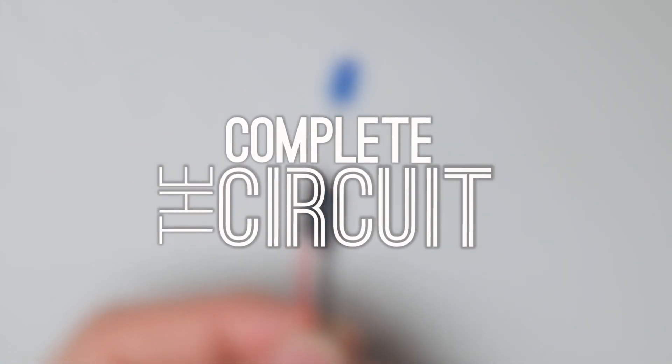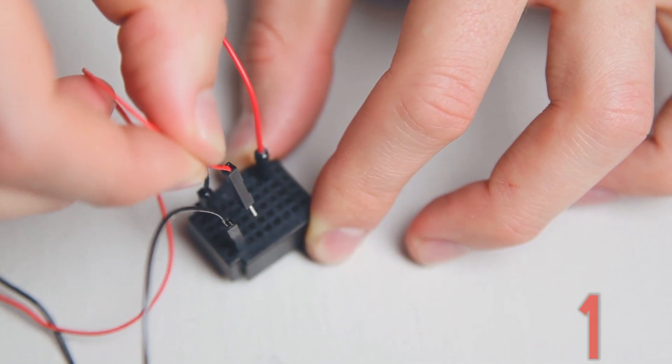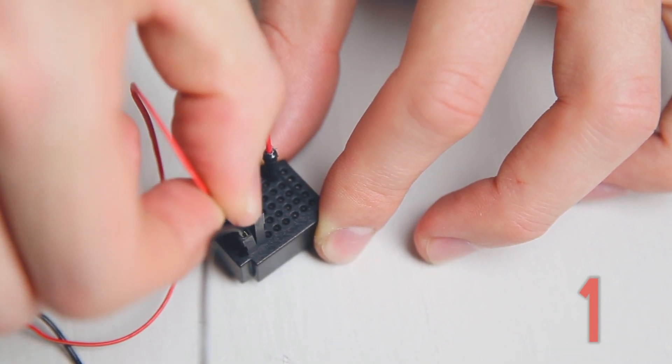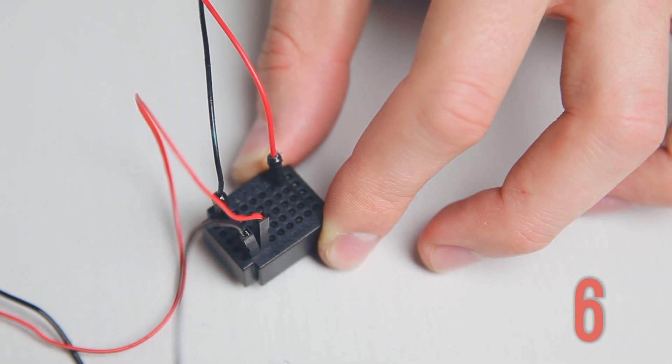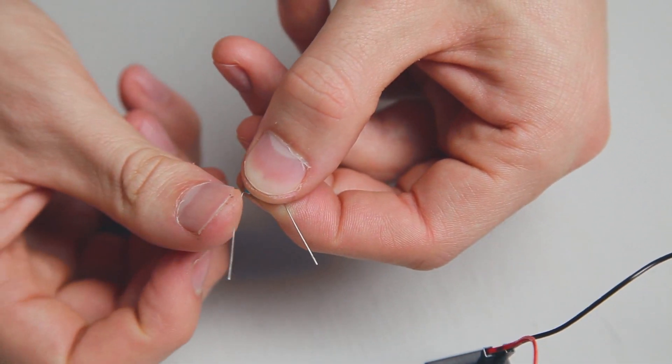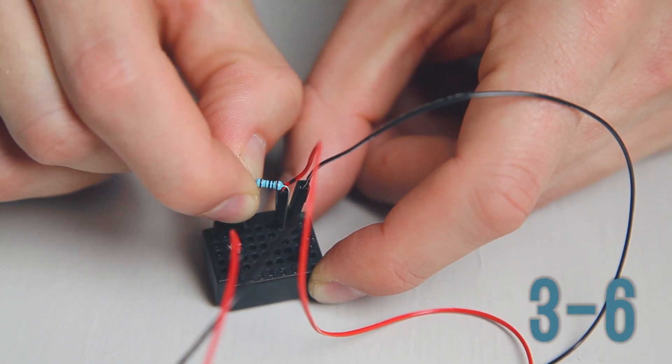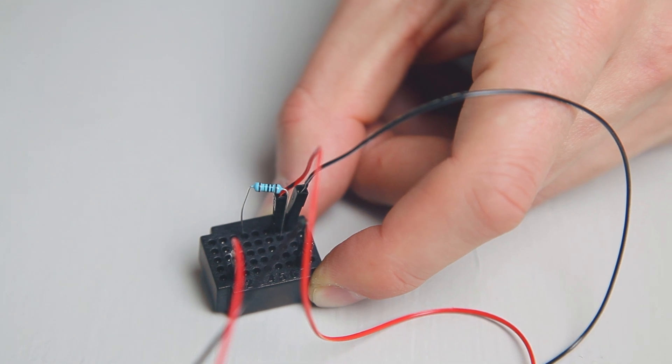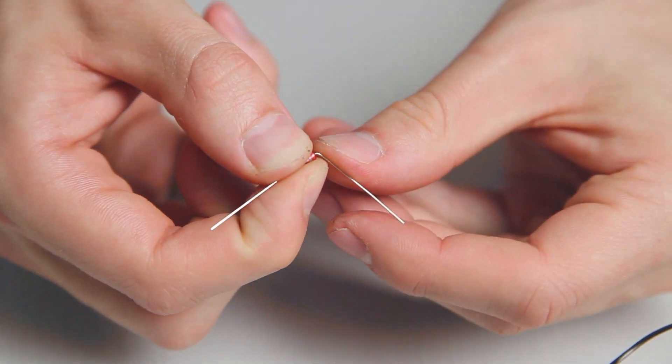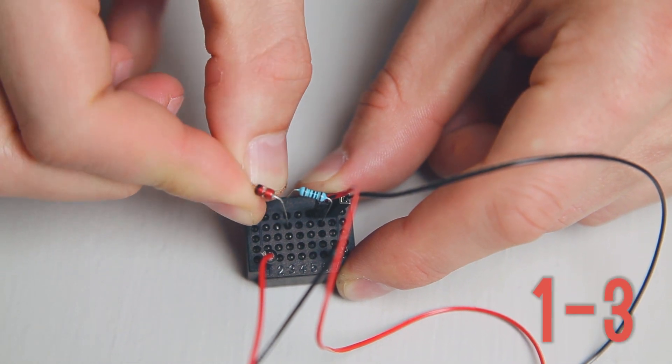Now let's add some extra components to our circuit. First, take the red wire that is connected to your LED and move it from line one to line six. Take your resistor and fold the sides down. Attach one to line three and the other to line six. Fold your diode wires down the same way. Attach one to line one and the other to line three.